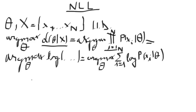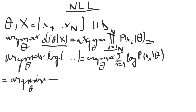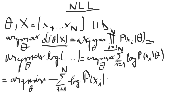To finally obtain the negative log likelihood, we have to change the sign of the equation, and to keep everything equivalent we transform the argmax to argmin. Our equation becomes: argmin over theta of minus the sum from i equals 1 to n of the logarithm of p of xi given theta.